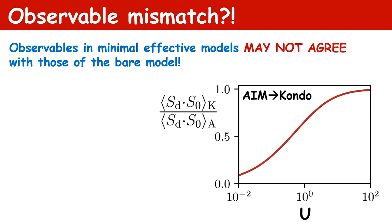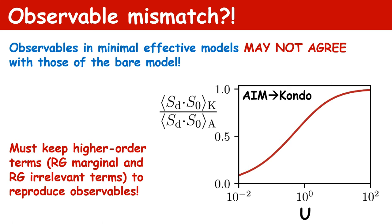Optimization on the level of the partition function does not guarantee that physical observables match in bare and effective models. As a good example, consider again the mapping of the Anderson model to the Kondo model. On the right-hand side I'm plotting the expectation value of the spin-spin correlation in the Anderson model and the Kondo model as a function of interaction strength U. The correlation only agrees in the large-U limit; as we go to smaller U, the spin-spin correlator in the two models simply do not agree. To reproduce these observables we actually need to include the RG-marginal and irrelevant terms. Correspondingly, if we performed machine learning on the level of observables alone, we wouldn't guarantee the correct low energy physics with the correct Kondo scales and density matrix spectrum.